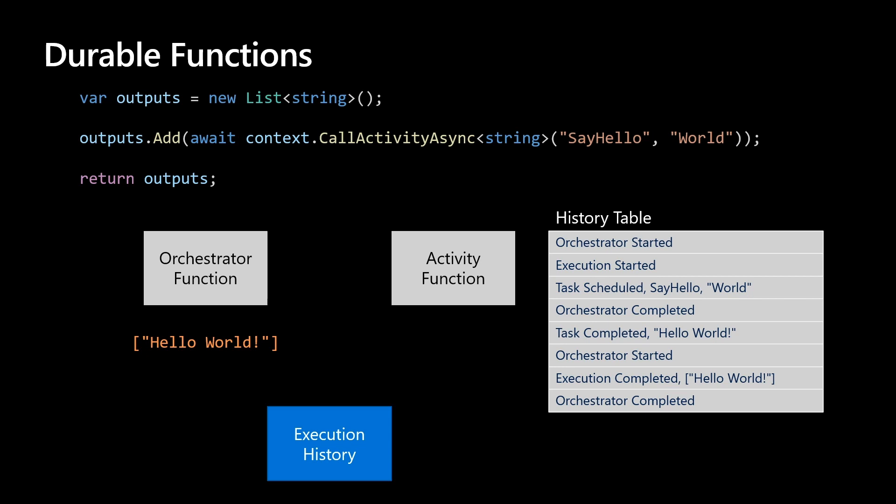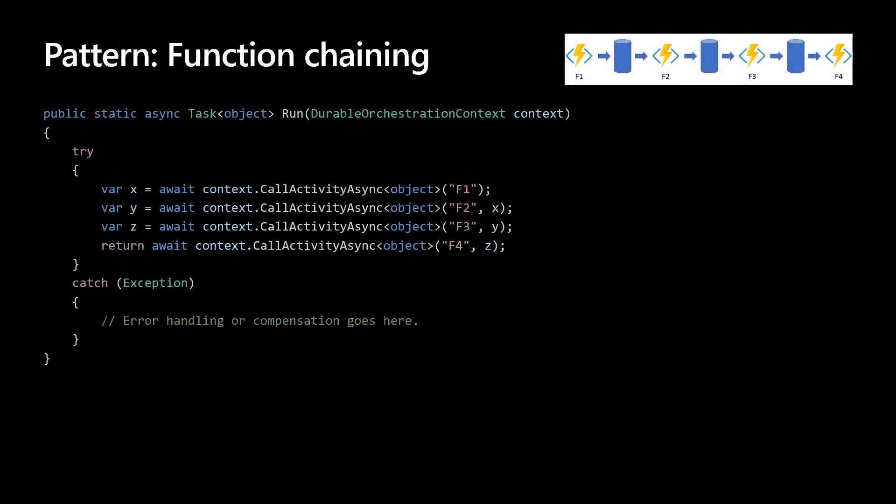That allows us to build amazing patterns in complex flows. In the function chaining pattern, a sequence of functions executes in a specific order. The output of one function is applied to the input of another function. In this scenario, F2 takes the result of F1 and passes it as a parameter, which becomes the input to F3 and so on until the orchestration is completed.